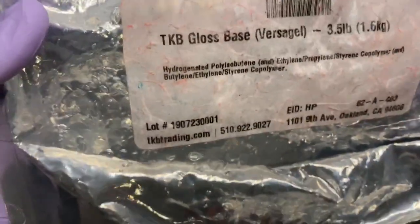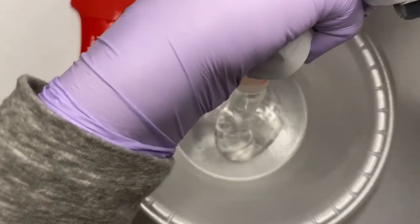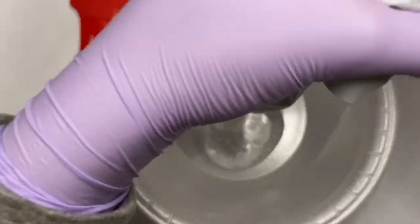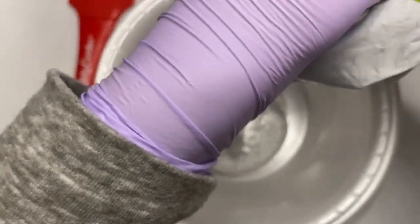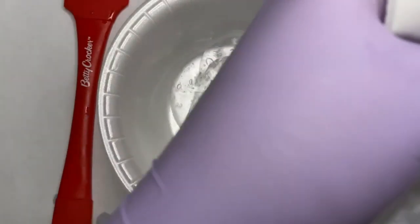Now I'm going to be using my Versagel that is from tkbtrading.com. You can purchase this all from there and I got the 3.5 pound, so this one's the big one, not the biggest but pretty big. I just got my order today, I got the new pigments.